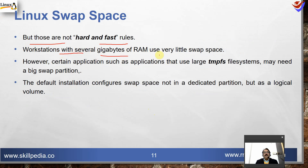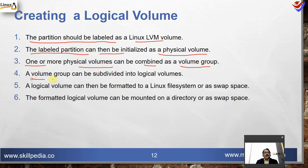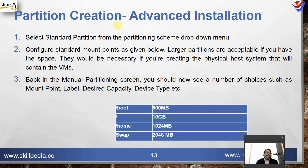Workstations with several gigabytes of RAM may have very little or no swap space. However, applications that use large temporary file systems (tmpfs) may need a bigger swap partition. The default installation configures swap not as a dedicated partition but as a logical volume. For LVM: first label the partition as Linux LVM, initialize it as a physical volume, combine one or more physical volumes into a volume group, divide into logical volumes, format as a Linux file system or swap space, then mount on a directory.